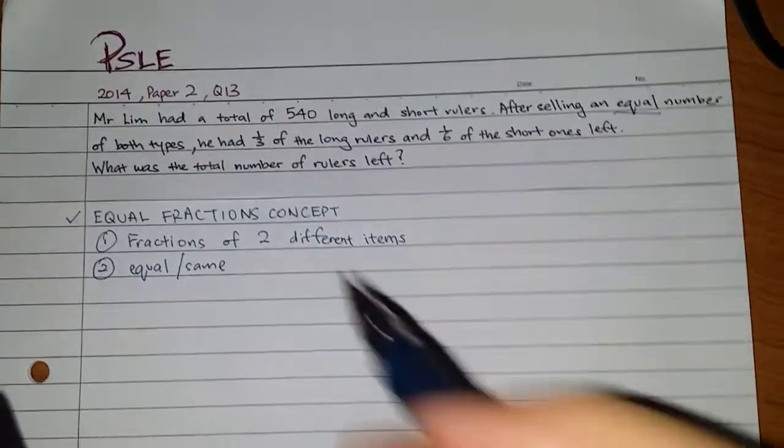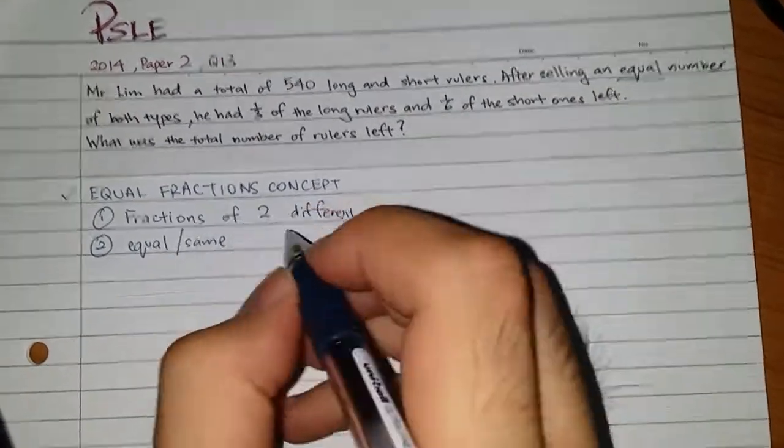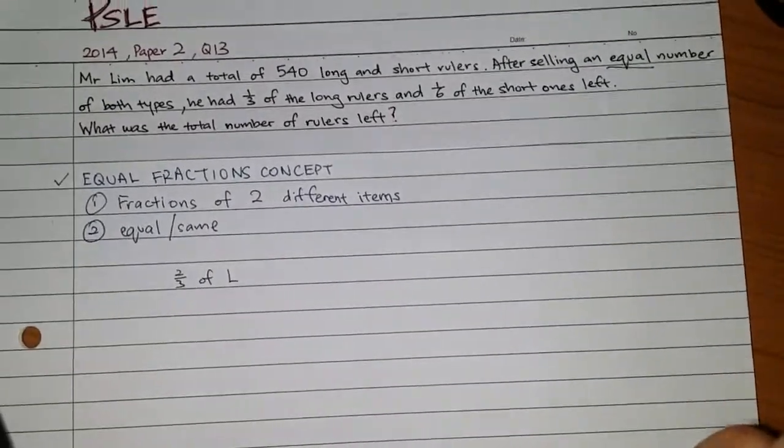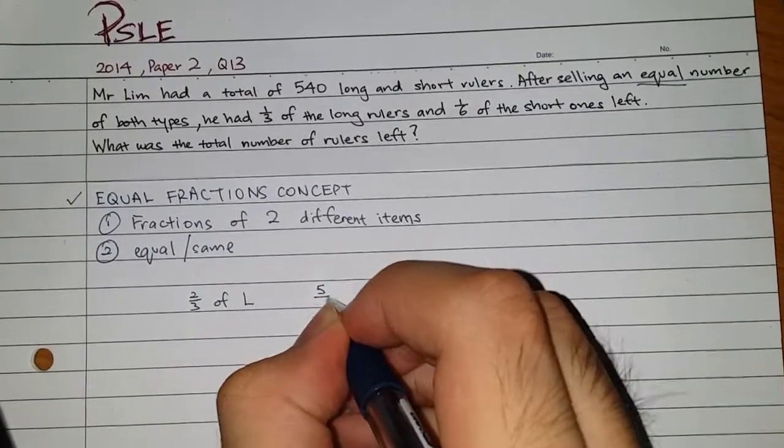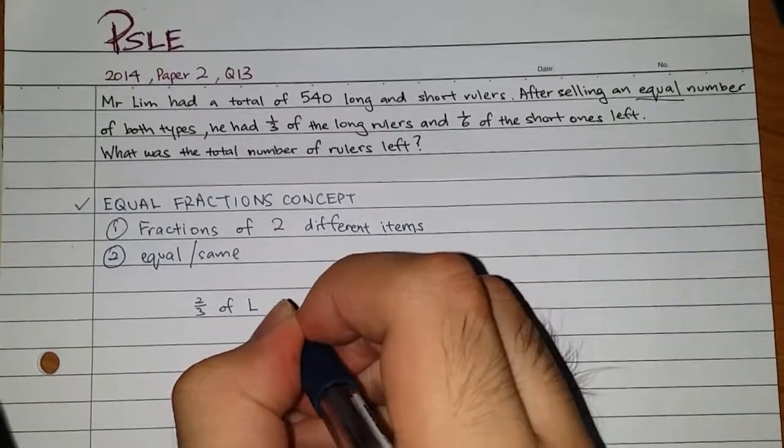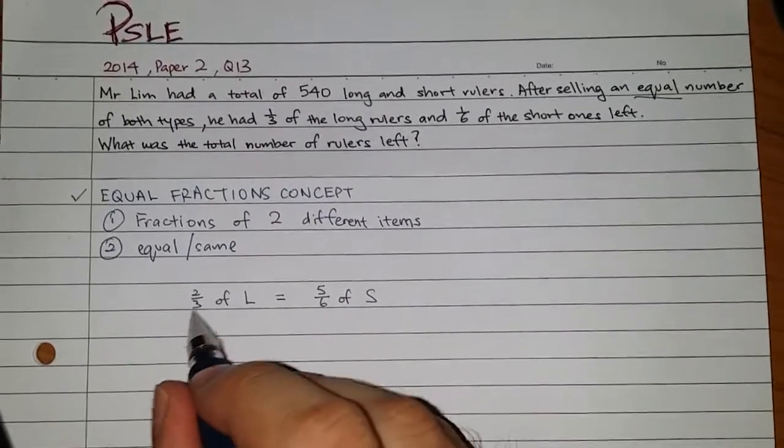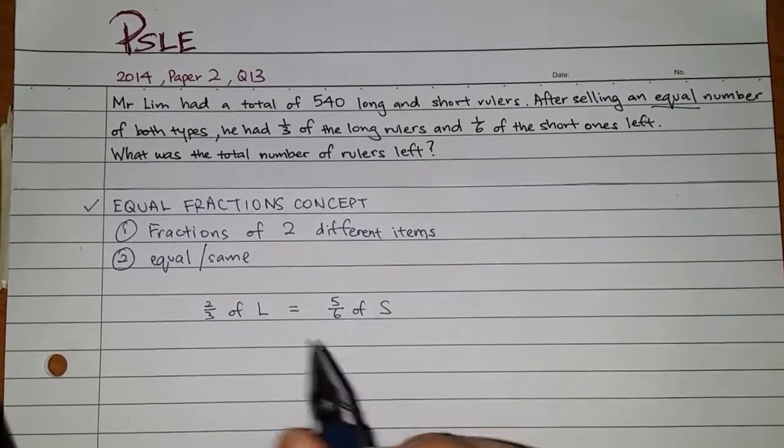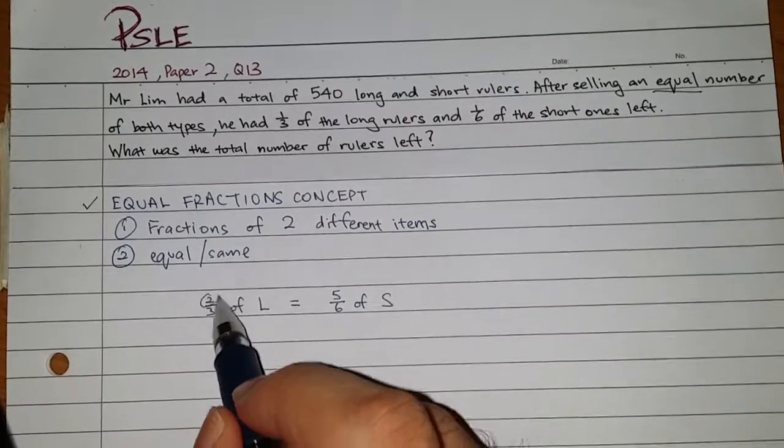So how do I do this question? Because I know that one third of the long rollers are left and one sixth of the short ones were left. So I can say that two third of the long ones are sold and of course five sixth of the short ones are sold.